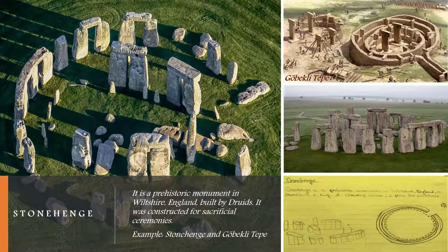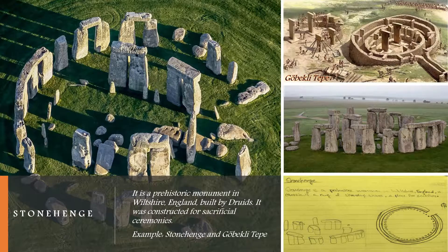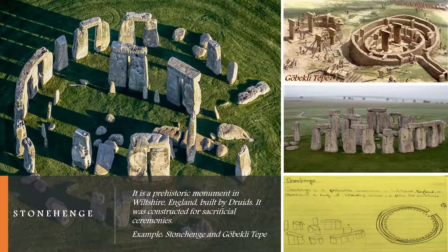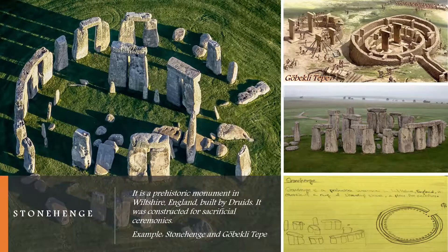There is also a very similar monumental structure to Stonehenge, which is Göbekli Tepe. It's found in the southeastern part of Anatolia in Turkey. This monumental structure was a temple that was built to worship the dog star Sirius, and it is considered one of the oldest temples in history.